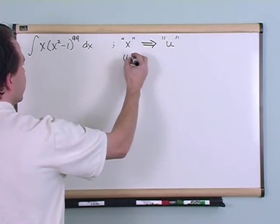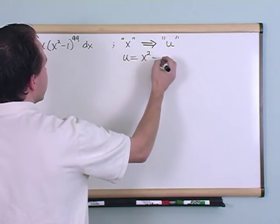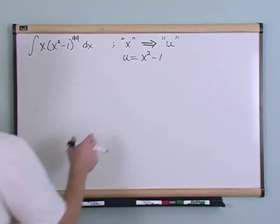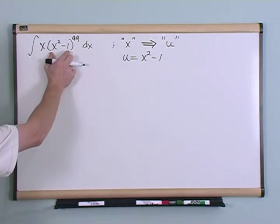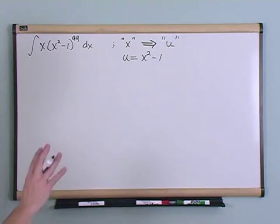And the way you do that is in this case let's say you take u is equal to x squared minus 1. That's the substitution that we're going to make. So you can see that everything in the parentheses here is going to be equal to u. Now just bear with me and we're going to do some problems and you'll see how to do this.